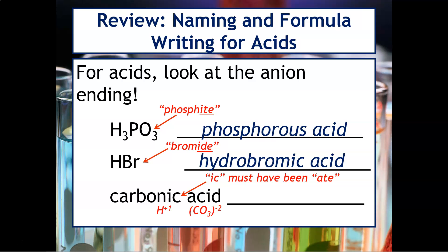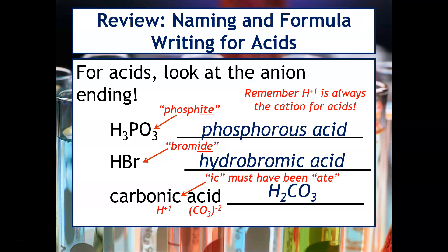If you look that up, you'll see that H is plus one and CO₃ is minus two — that's carbonate. So it's going to be H₂CO₃. Remember, whenever you're writing the formulas for acids, H⁺¹ is always going to be the cation.